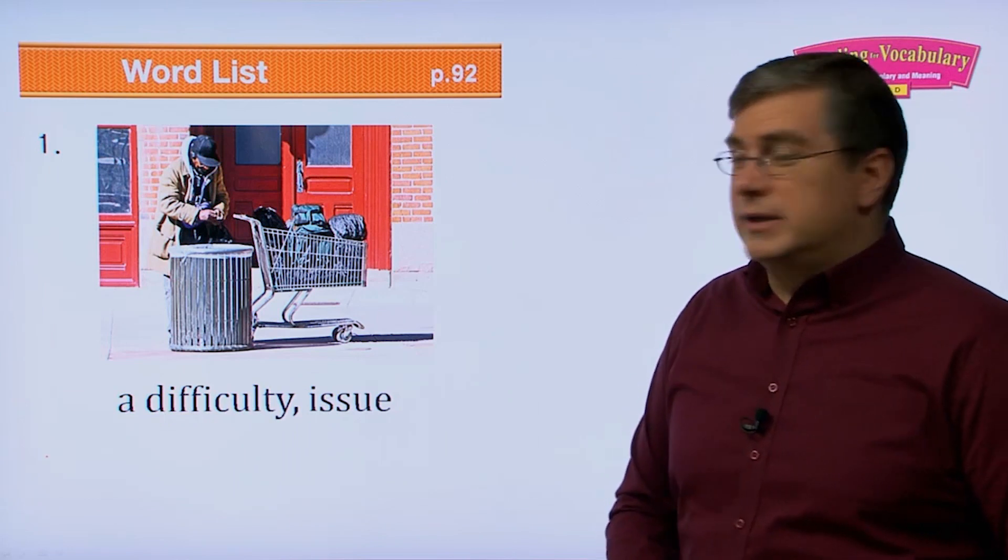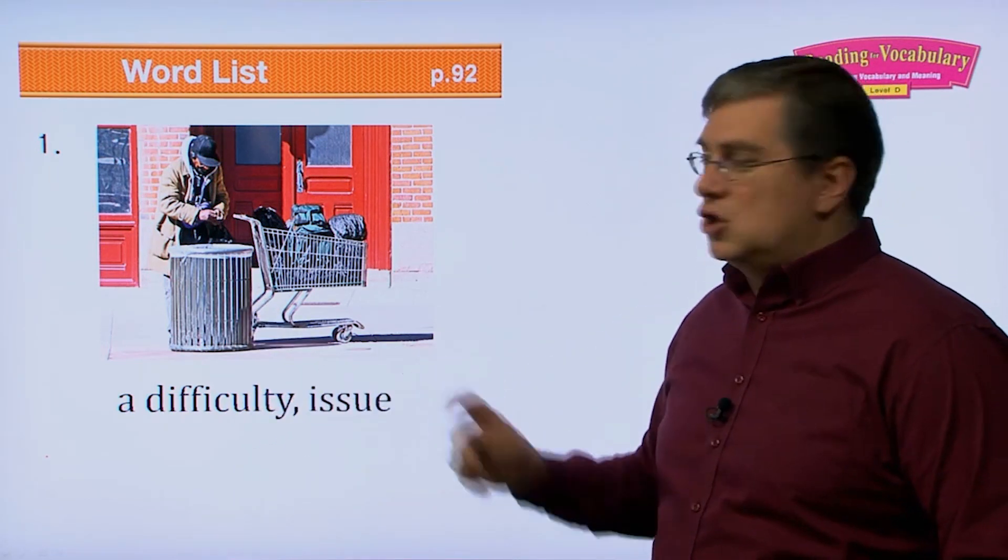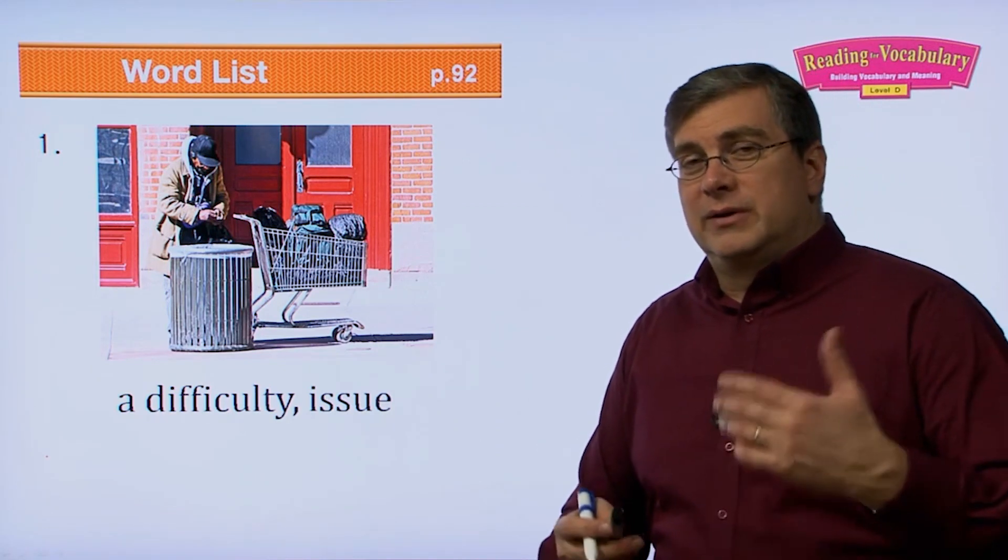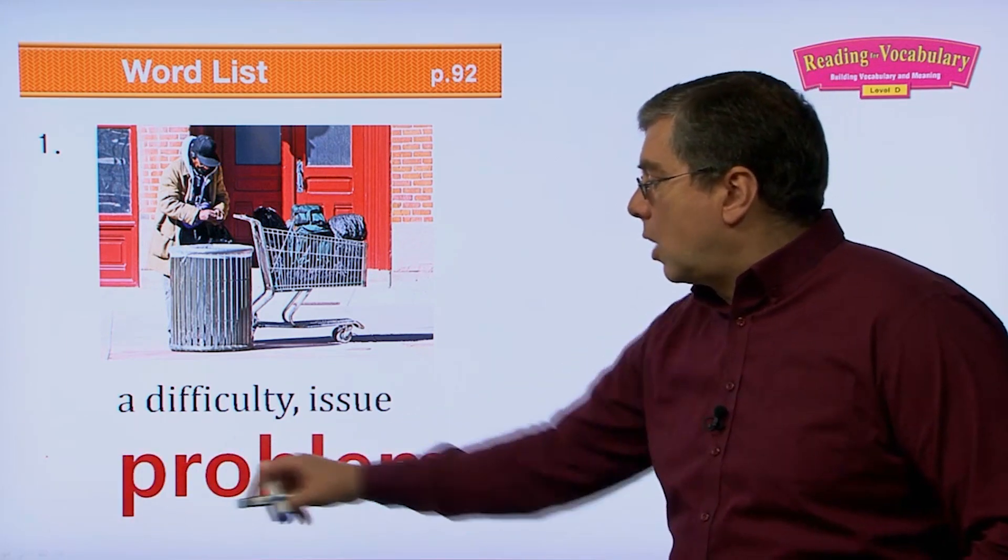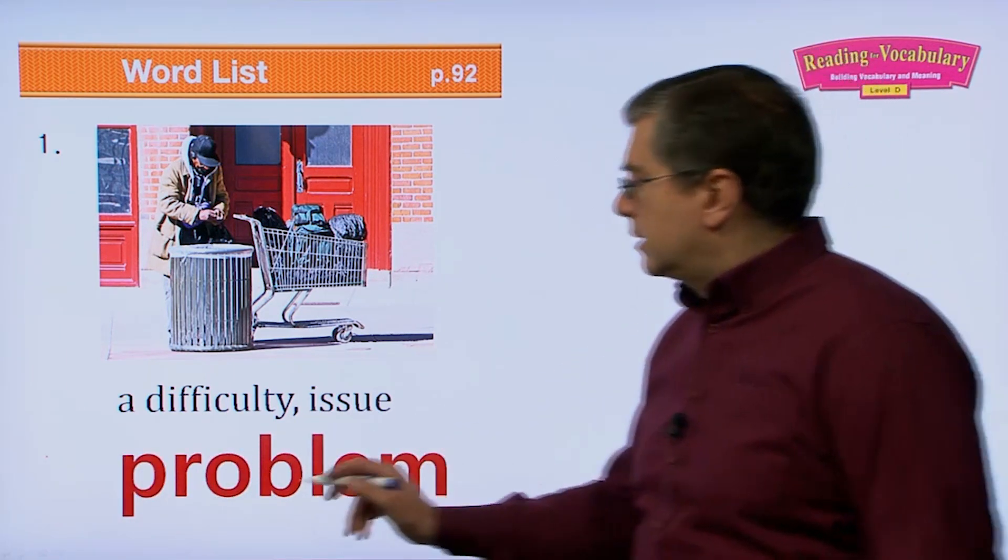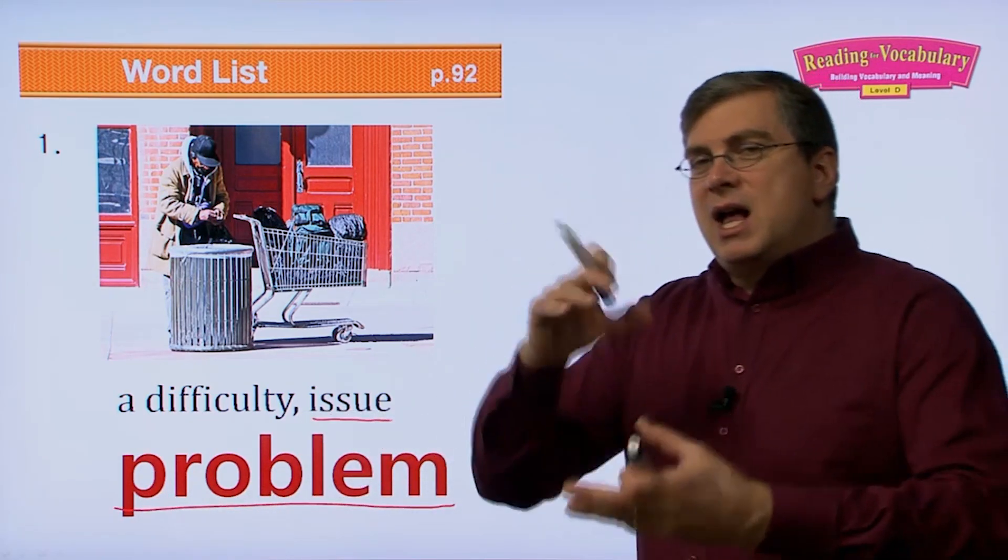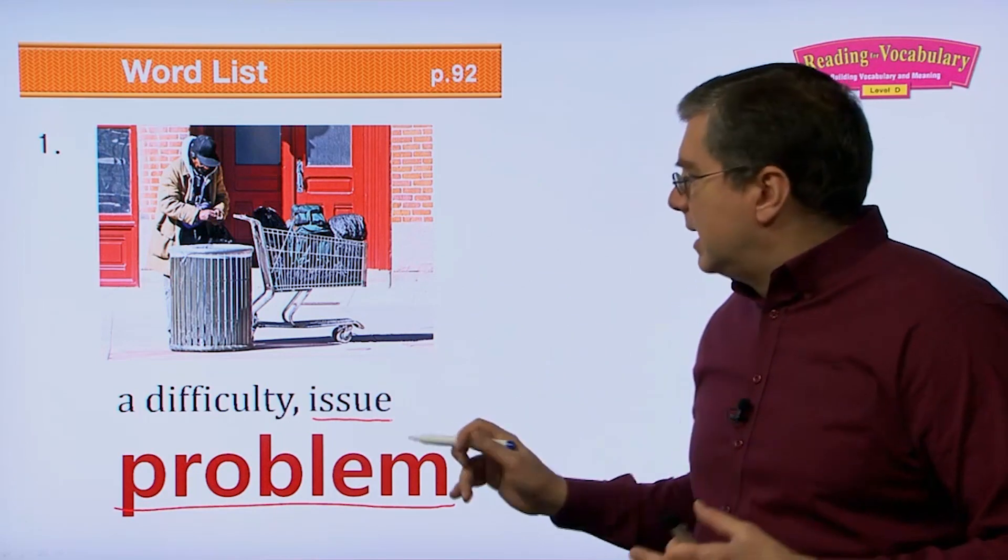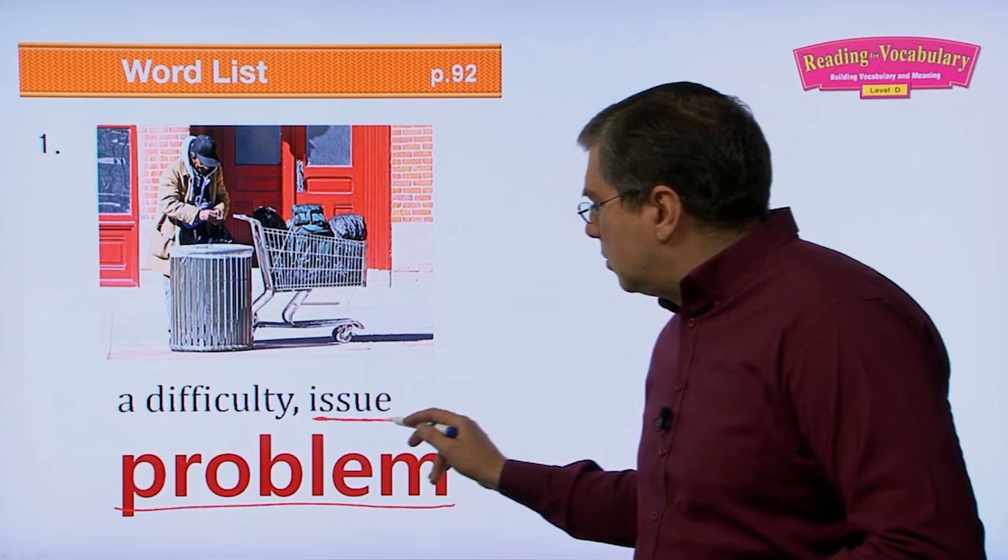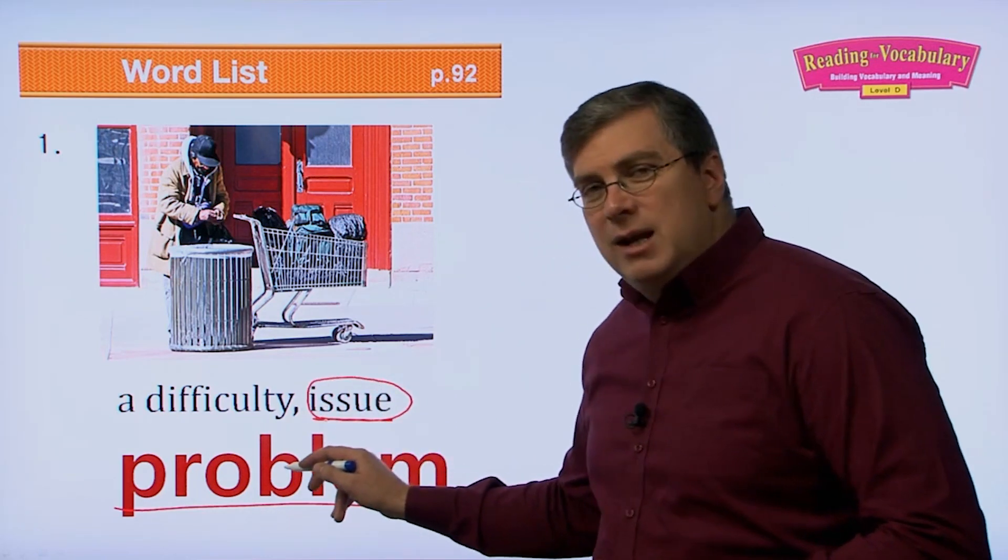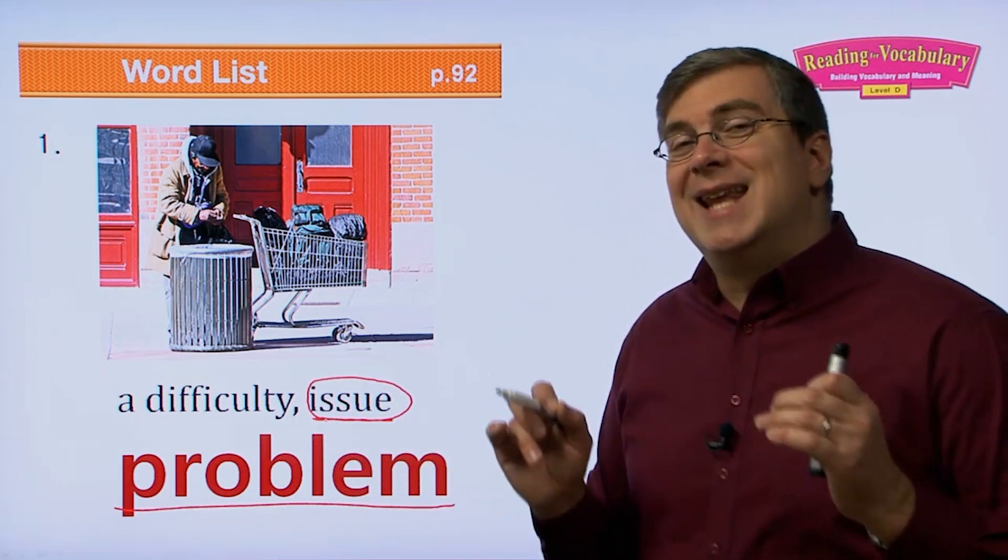The first word on our list today is a difficulty or an issue. If you have a difficulty or if there's some issue that you have to deal with, we call that a problem. Now it's very interesting because I'd like to point out something. Problem and issue have become kind of not interchangeable, but substituted. In America, many people will say issue instead of saying problem. Why? Because problem is negative.